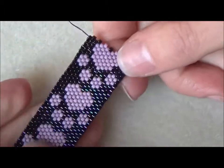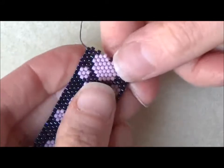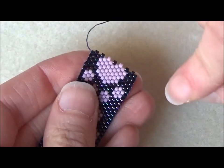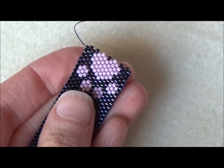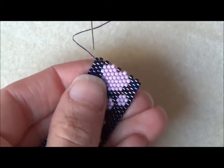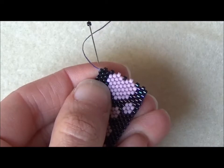Okay, so this is some odd count peyote stitch that I'm already working on. I'm going to show you how I add my rows and do my little turn at the end. This next row that I'm doing in my pattern is all one color, so that makes life easier.